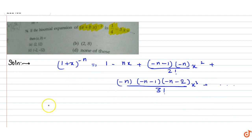If we look at this expansion, we have (a + bx)^(-2).